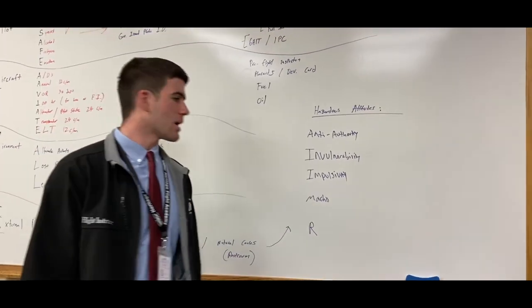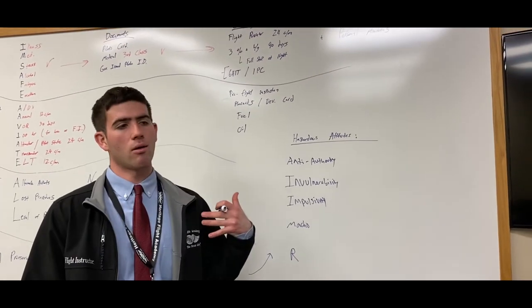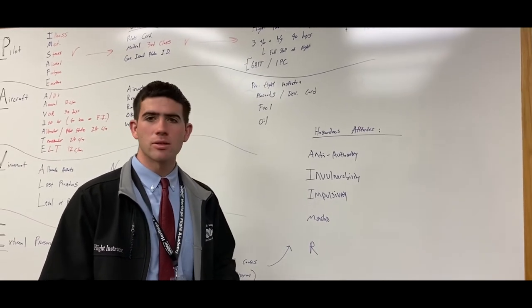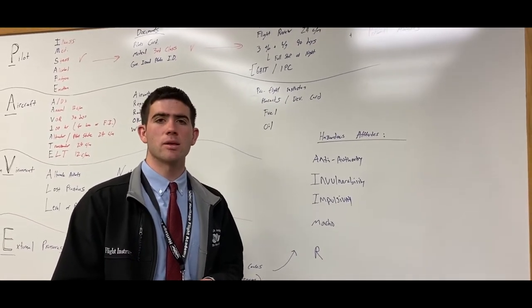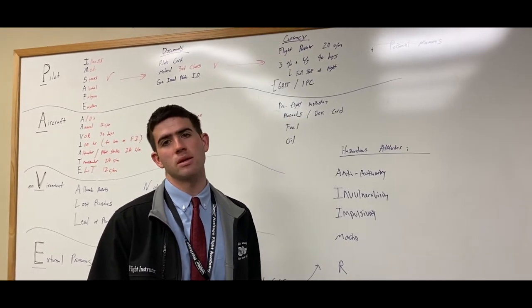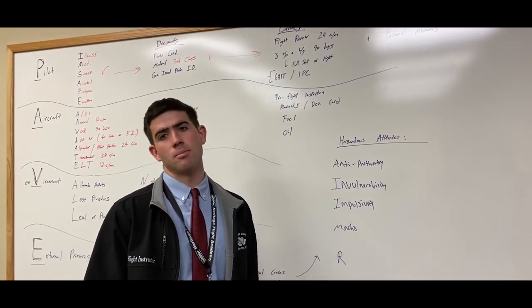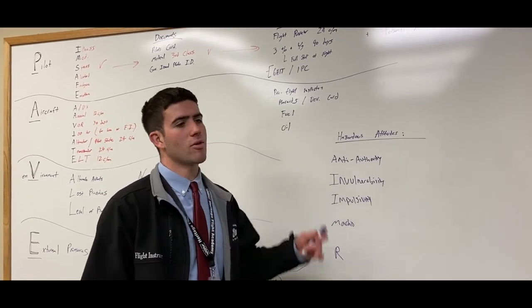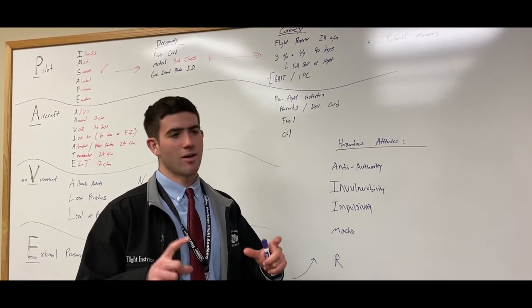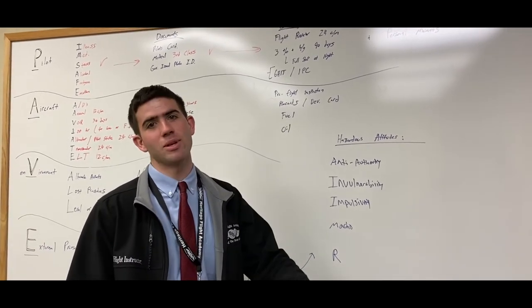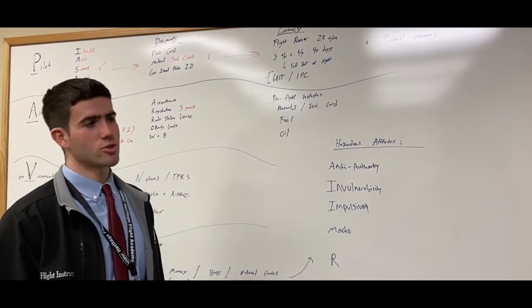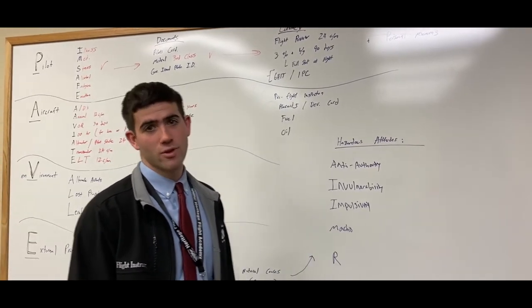Next one we have is macho. Macho is really taking a lot of risk and chances that are unnecessary. So a common one I like to use is let's say the minimum safe altitude over the beach in a non-congested area might be 500 feet over any person, vessel, or structure. But then what happens is that you're at like 500 feet and someone's recording you on the ground at that low altitude buzzing over the beach. The FAA might consider that a bit of a macho attitude and also reckless operation of the aircraft under 91-13.